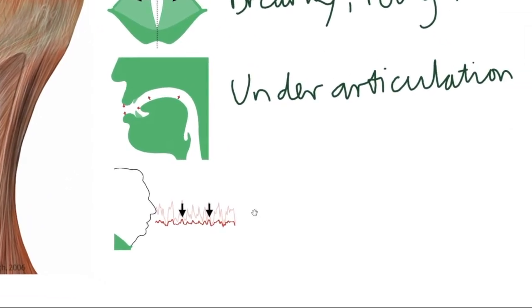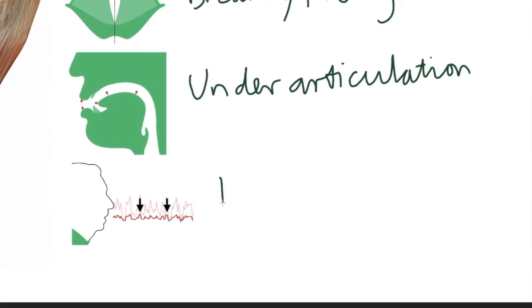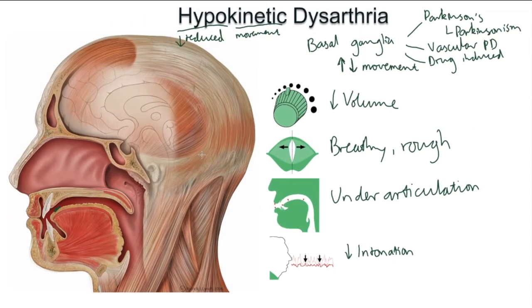Finally, you do get reduced intonation. Instead of normal prosody — the normal highs and lows of our pitch as we speak — it's very reduced and you get a monotone output. Some non-speech features include masked face, where the facial muscles are quite rigid and you don't get much facial expression. There's also a disfluency associated with most causes of hypokinetic dysarthria.